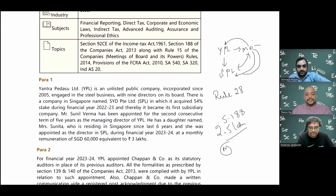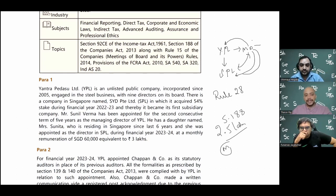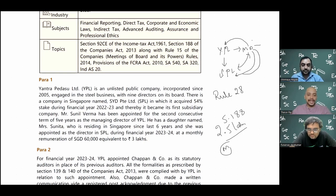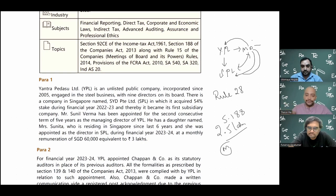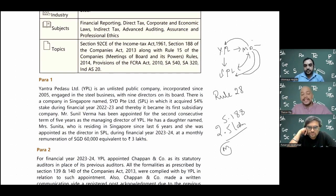To summarize paragraph one: the main theme is related parties across all subjects - FR, law, income tax, GST, and customs. YPL and SPL are related, and the director and his daughter are also related. Note-making suggestion: divide your notes in a columnar basis - one column each for FR, law, income tax, and GST - and mention the relevant section numbers. This structured approach helps you connect concepts when you read the notes later.